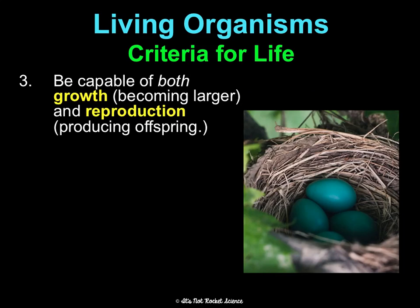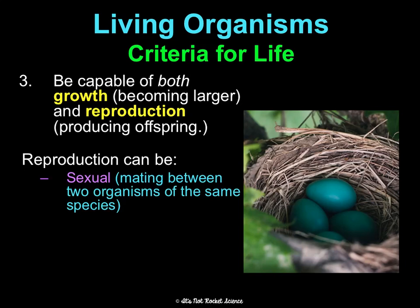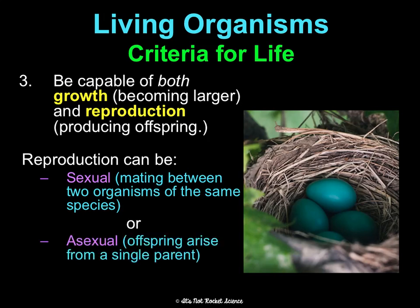Third, you have to be able to both grow — meaning become larger and develop — as well as reproduce, producing offspring. Reproduction can be sexual or asexual. Sexual reproduction means it takes two organisms to make offspring, whereas asexual offspring can arise from a single parent.